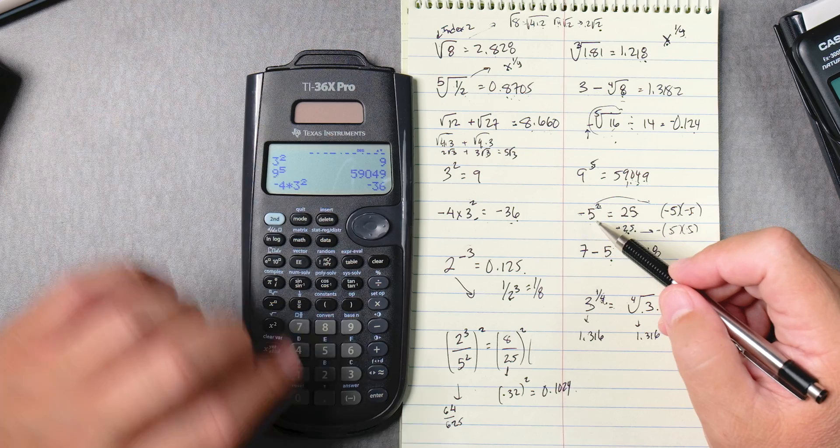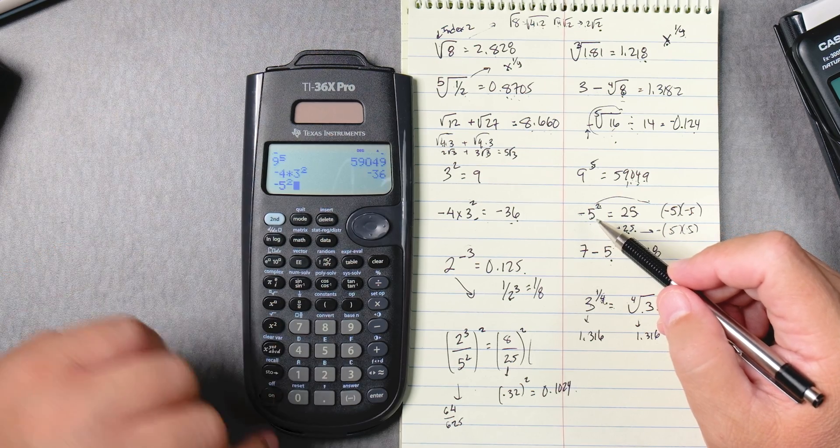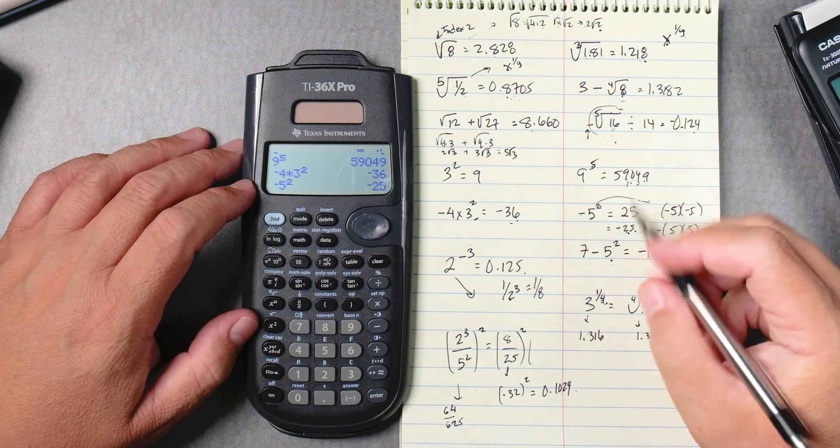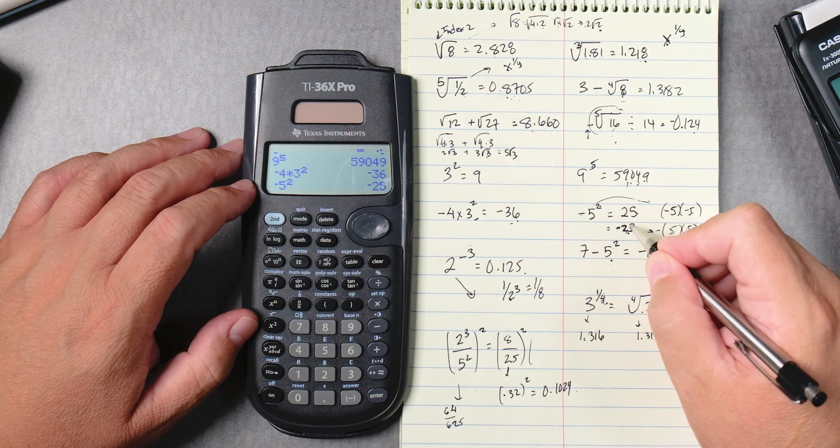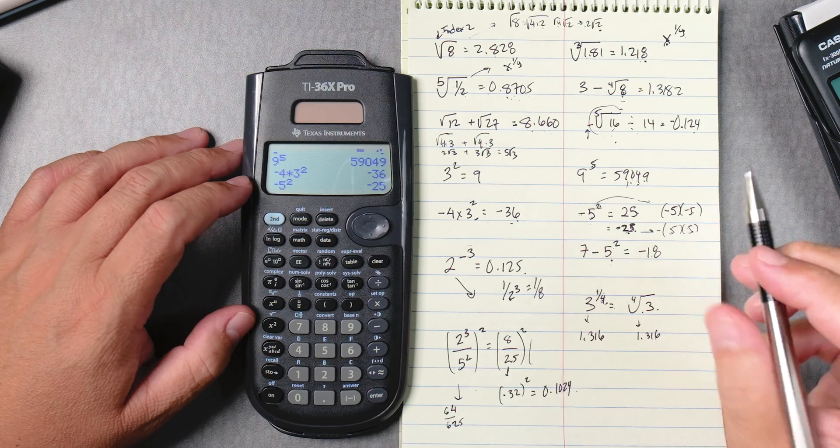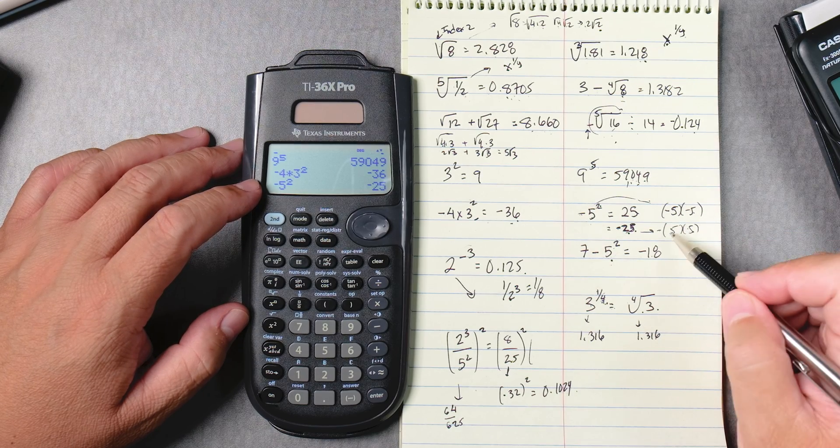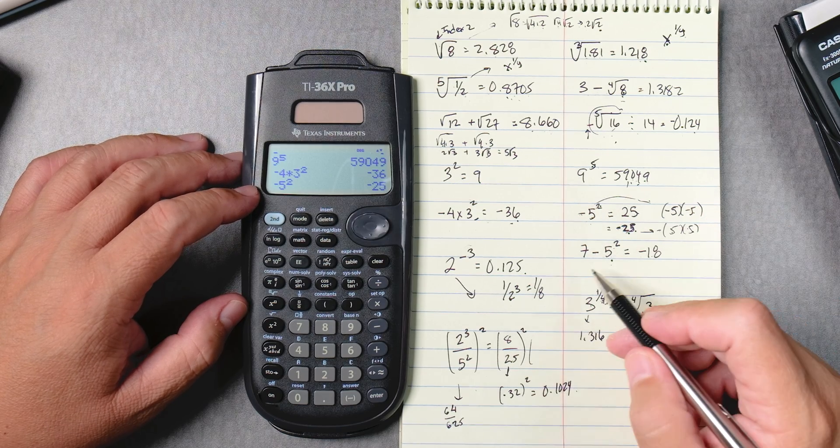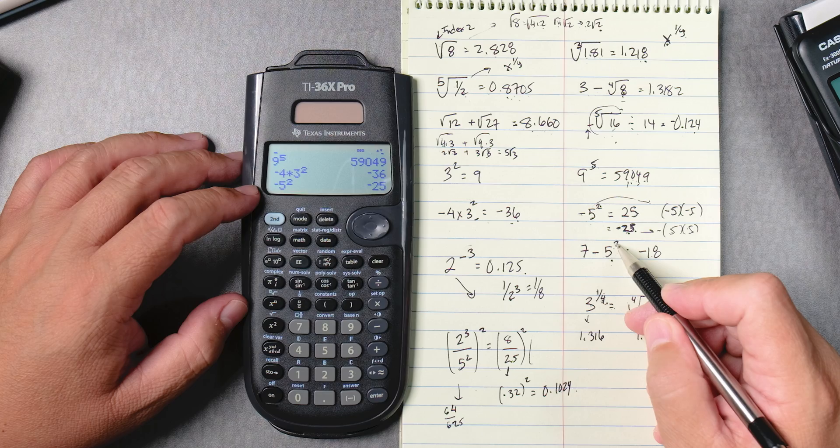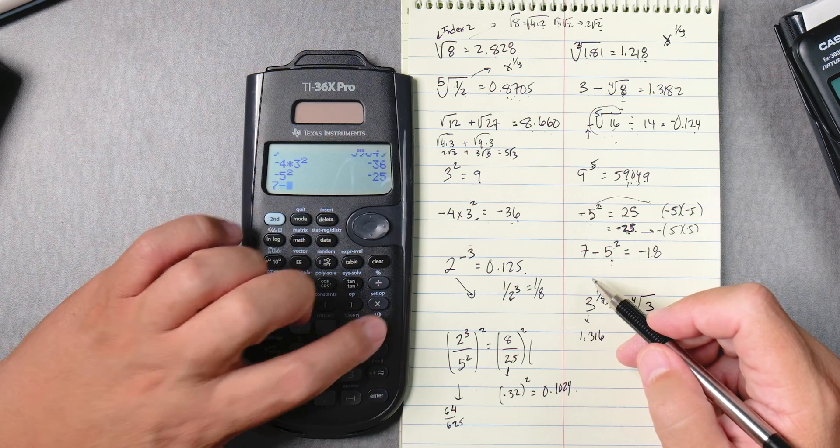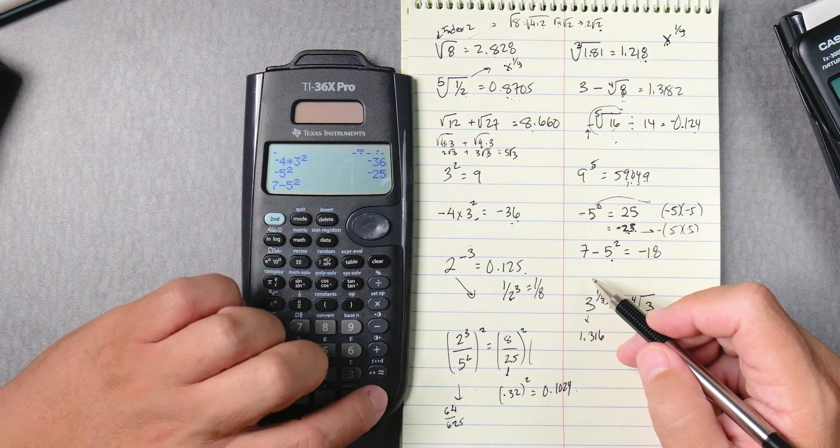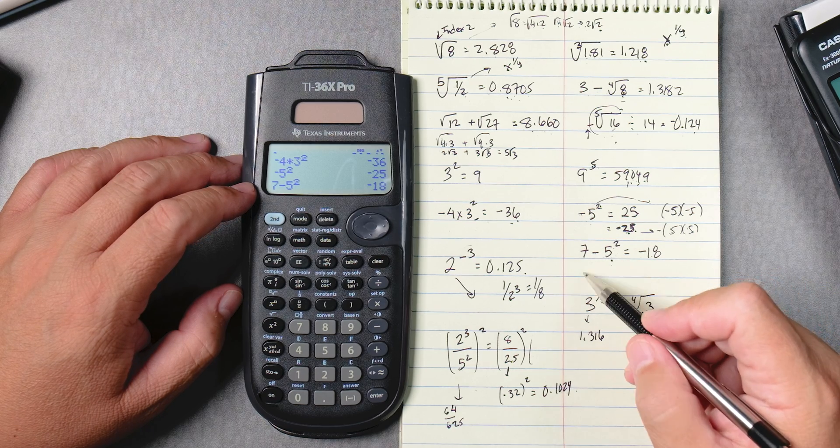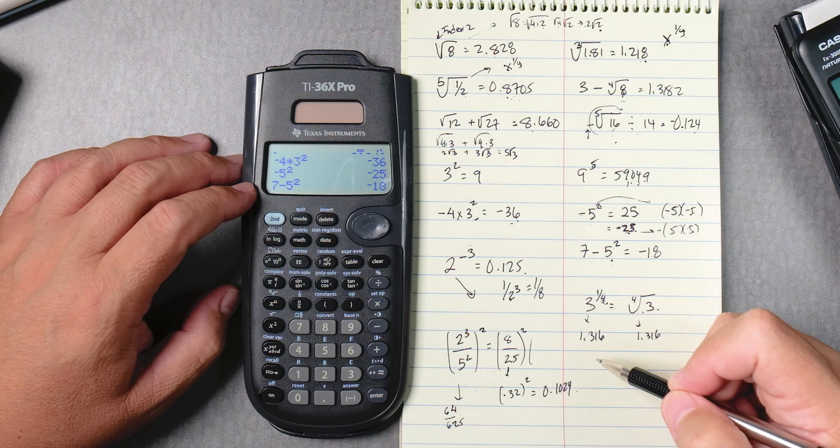Let's look at this, negative 5 squared, negative 5 squared, enter, negative 5 squared is giving you negative 25. Some calculators will give you positive 25. So what it's doing is, it's just multiplying 5 times 5 and it's leaving the negative sign. Why? Because some problems have 7 take away 5 squared. 7 take away 5 squared, enter, gives you minus 18. So 5 squared is 25, don't forget the negative, 7 take away 25 is negative 18.